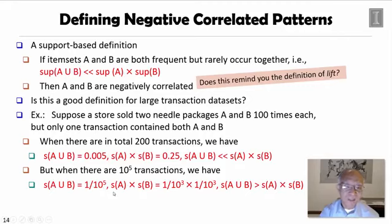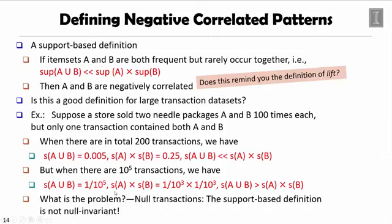This number is even smaller than A and B getting together. Then you may say, oh, A and B getting together is very frequent or it's positively correlated. Actually, it's not. What's the problem?